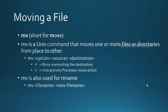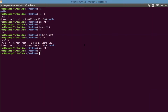Moving forward to the move operation: using the 'mv' command, we can move files from one location to another in the UNIX system. The usage is: 'mv [options] source destination'. Options include '-f' for forceful move and '-i' for interactive mode. The mv command can also be used to perform rename operations.